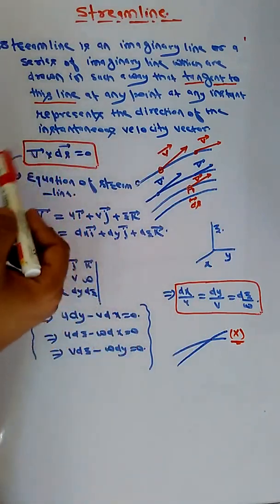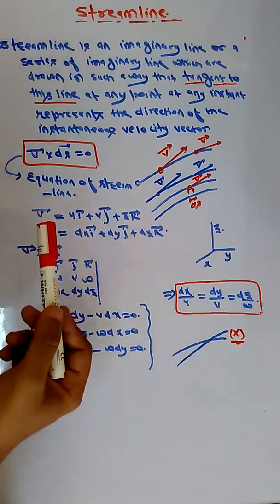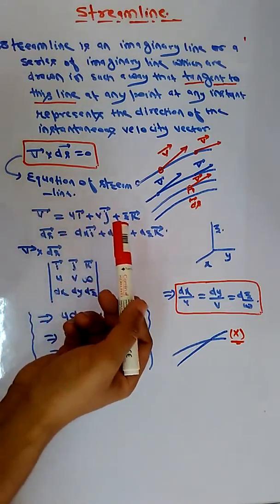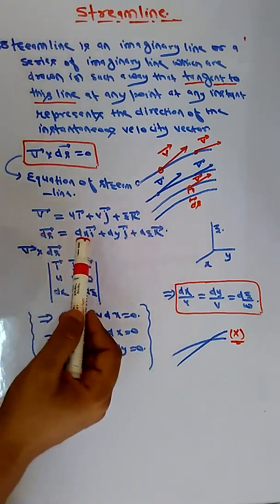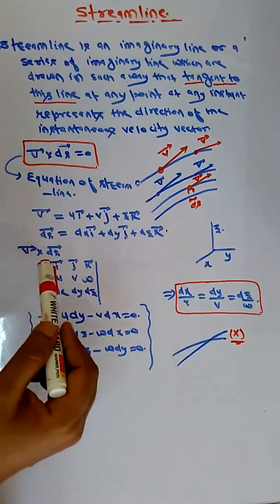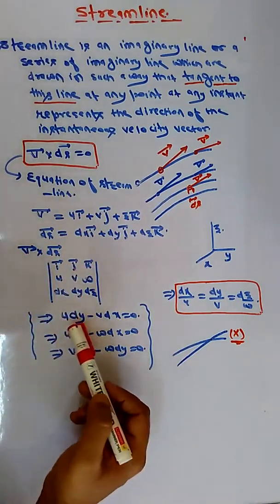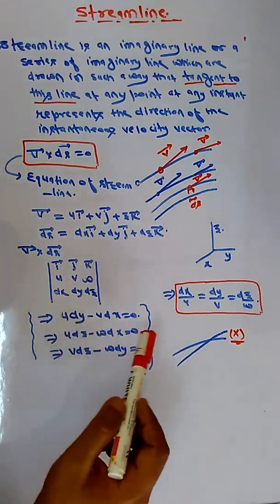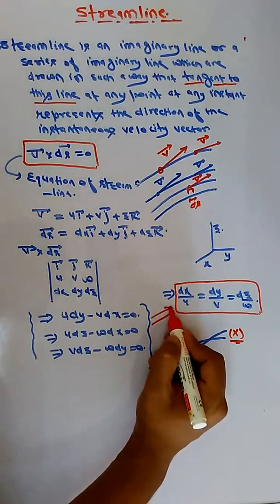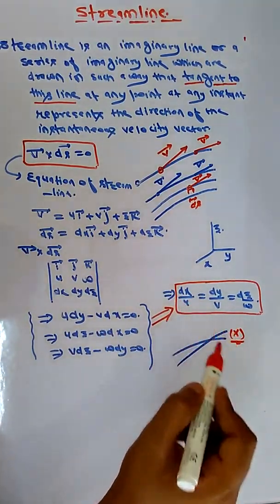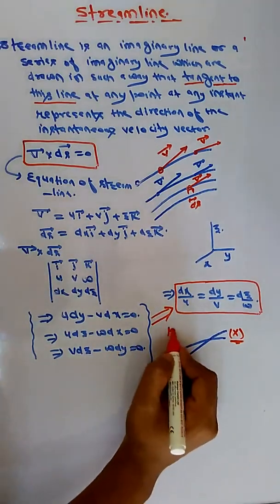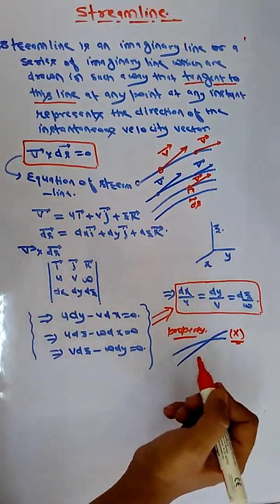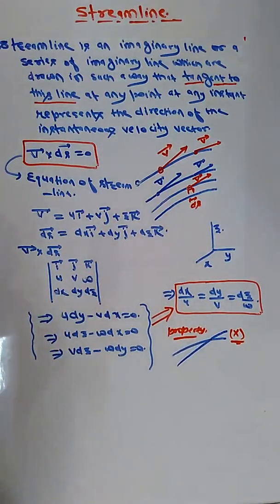In mathematical form, V⃗ × ds⃗ = 0, where V⃗ has three components u, v, w in the i, j, k directions, and ds can be split into dxi + dyj + dzk. Writing out the cross product gives three equations: u·dy − v·dx = 0, u·dz − w·dx = 0, and v·dz − w·dy = 0. Solving these gives the relation dx/u = dy/v = dz/w — the equation of the streamline. And the key property: no streamlines cross each other.